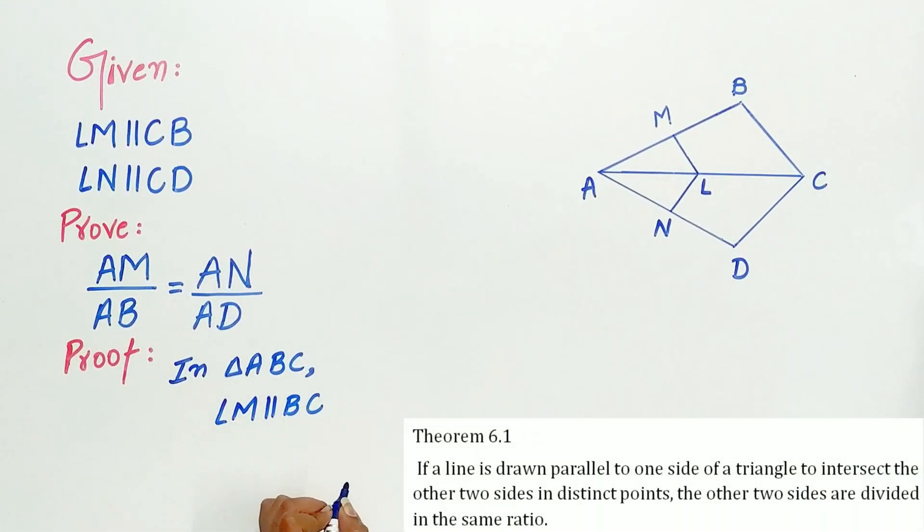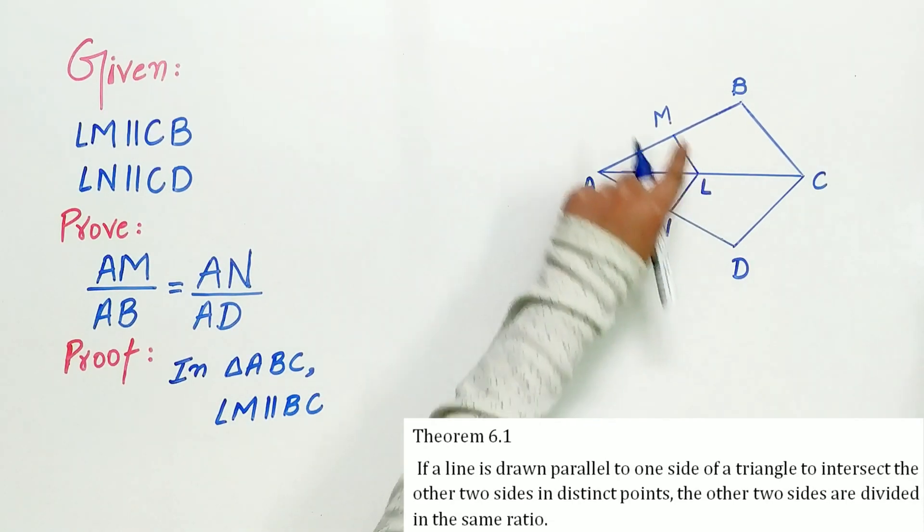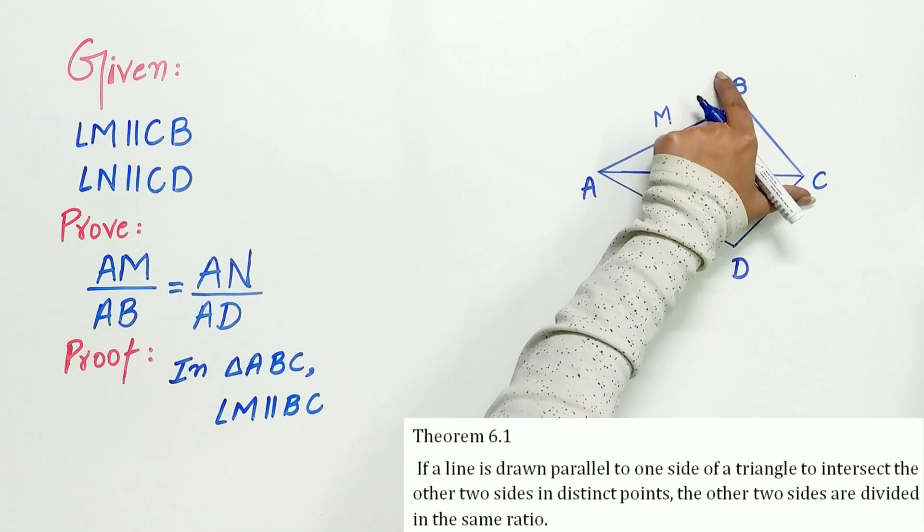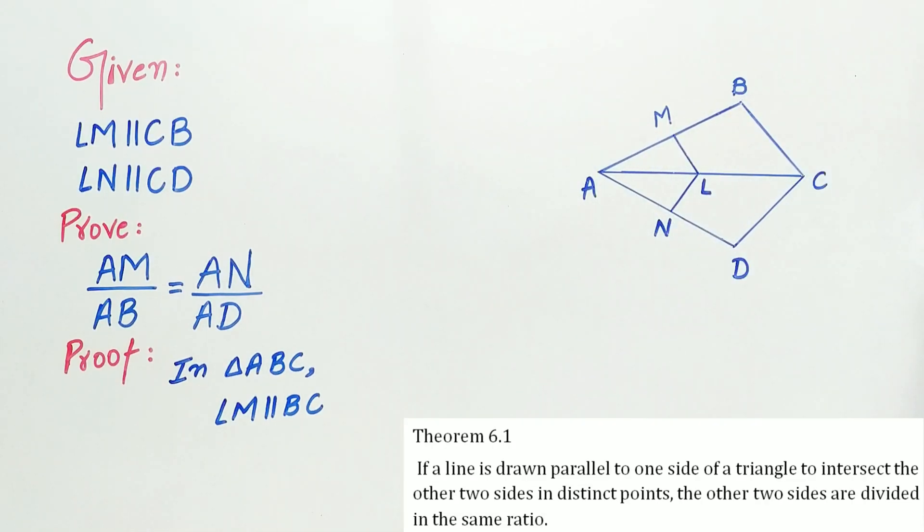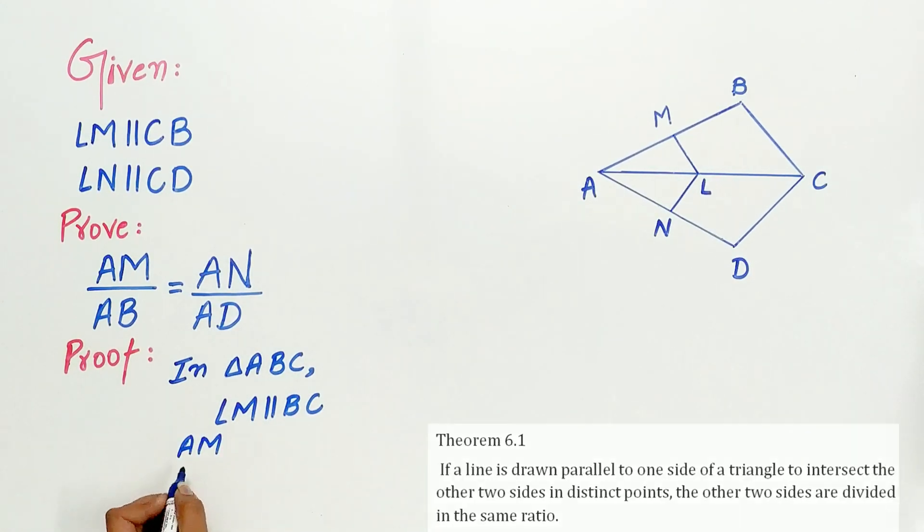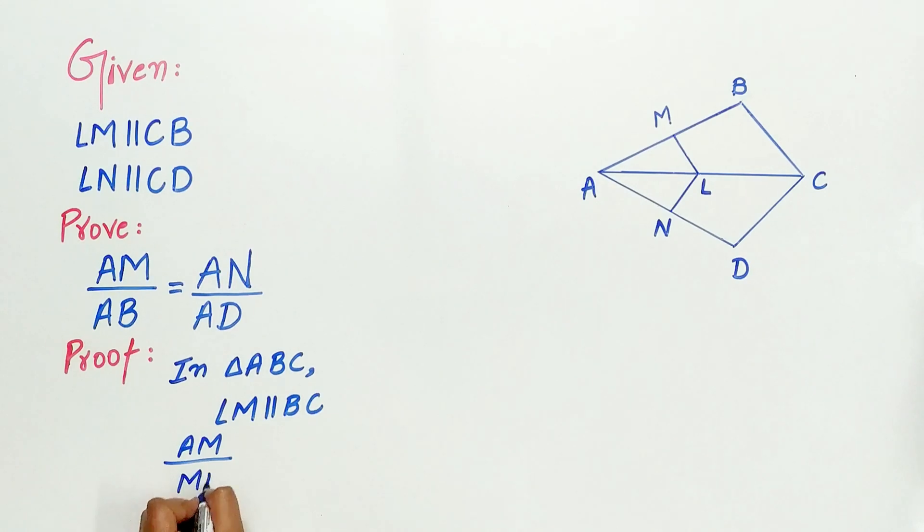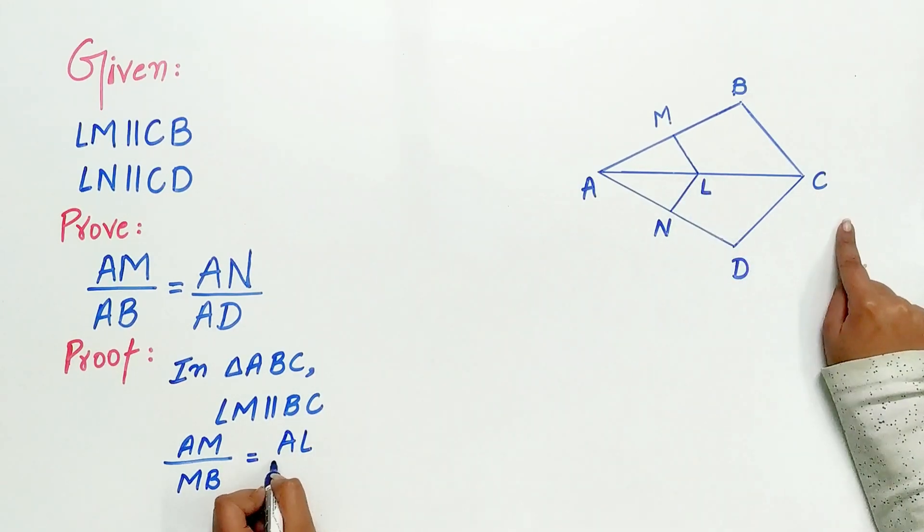By theorem 6.1, that says if a line is drawn parallel to one side of the triangle, then the other two sides are divided in the same ratio. Hence, AM by MB is equal to AL by LC.